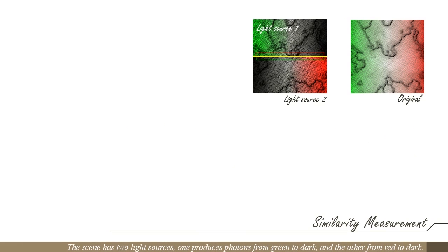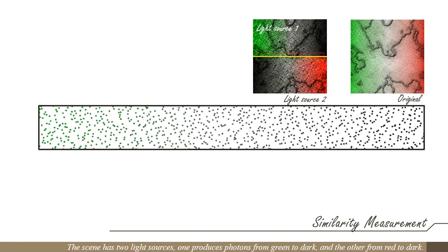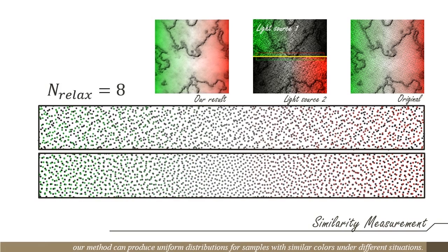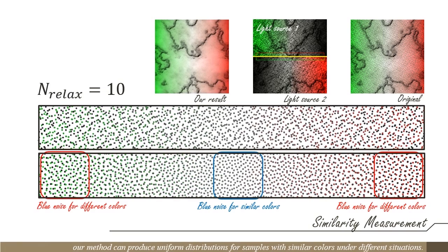The scene has two light sources. One produces photons from green to dark, and the other from red to dark. As shown, even though the initial photons are not uniformly distributed, our method can produce uniform distributions for samples with similar colors under different situations. The end result has a less noisy rendering.